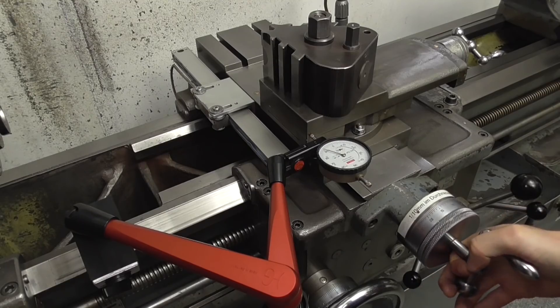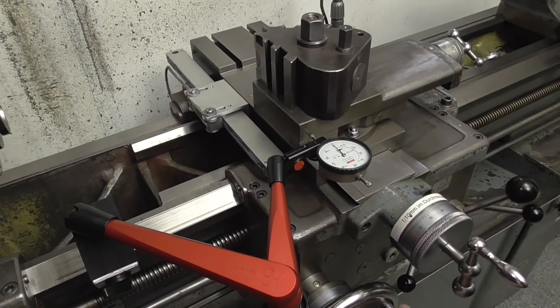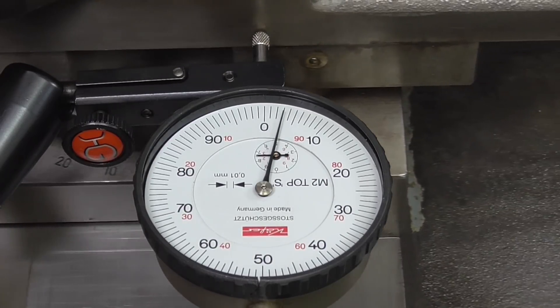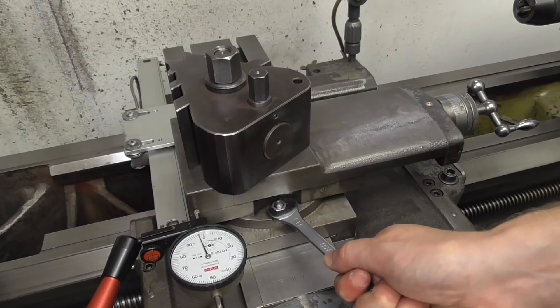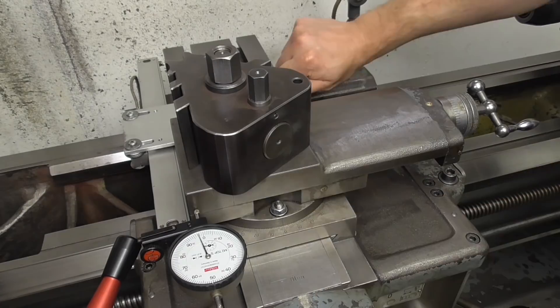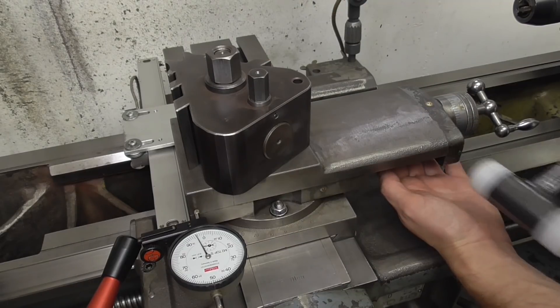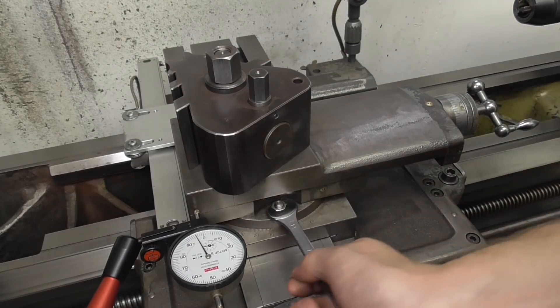Okay, now I need to verify with a dial indicator that the top slide is at exactly zero degrees. I correct the offset with a few light hits with the nylon hammer until the top slide is lined up perfectly.